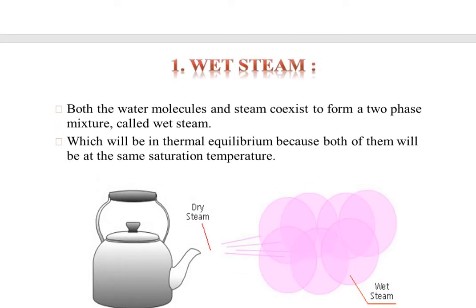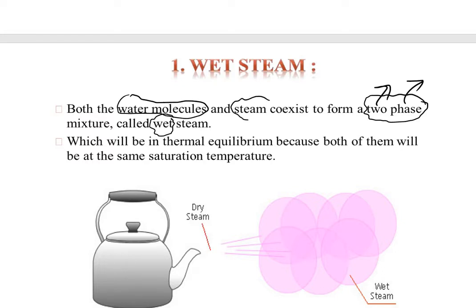Wet steam: both water molecules and steam co-exist to form a two-phase mixture. In wet steam, water molecules plus steam are present, and they will be in thermal equilibrium because both of them will be at the same saturation temperature.